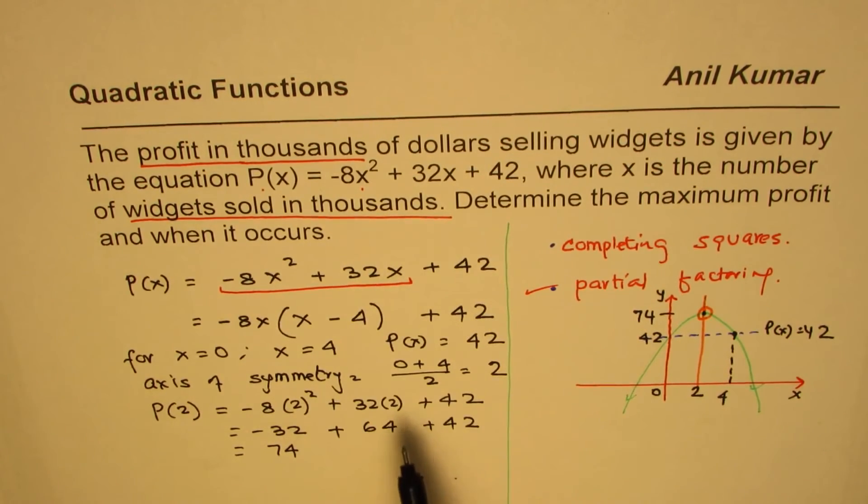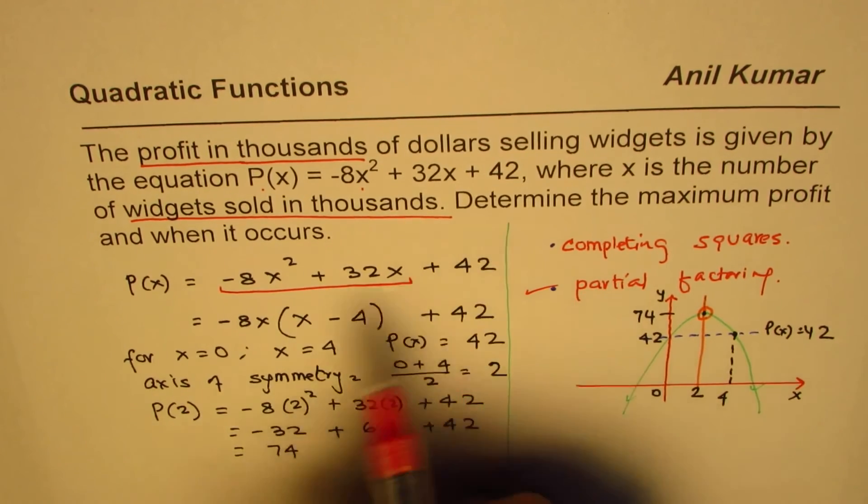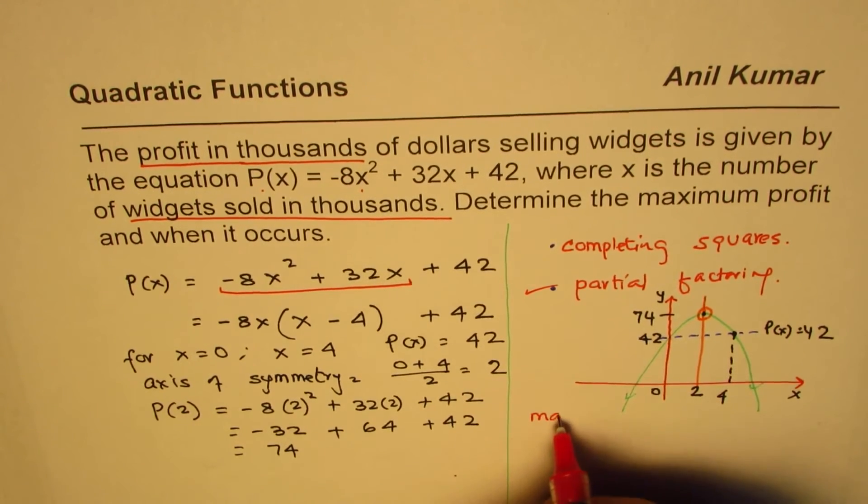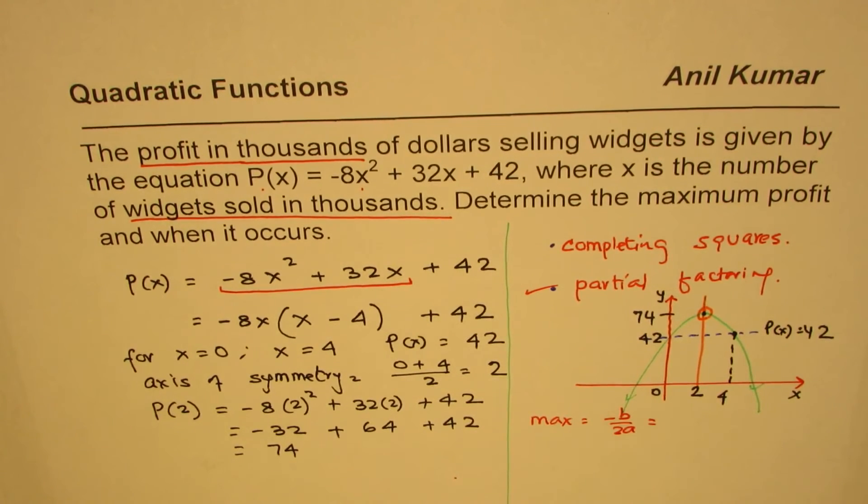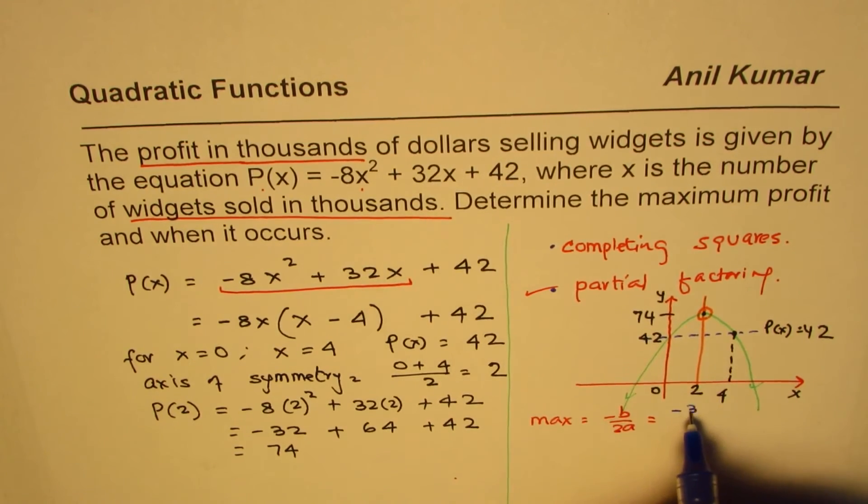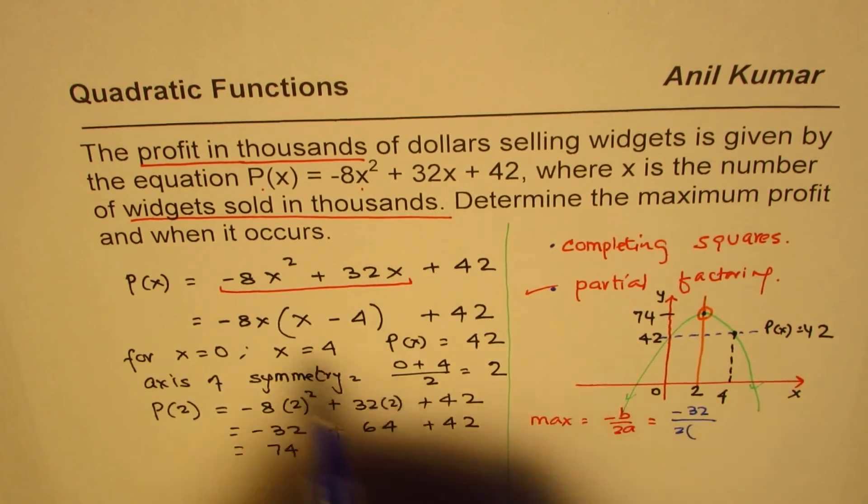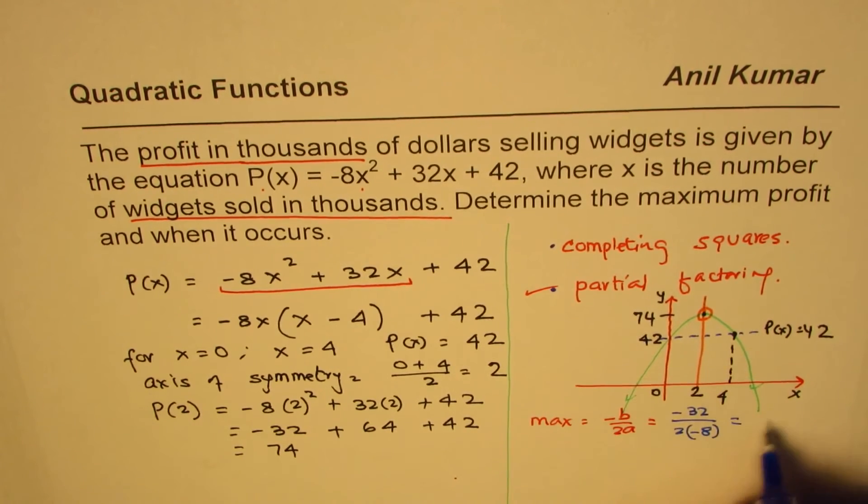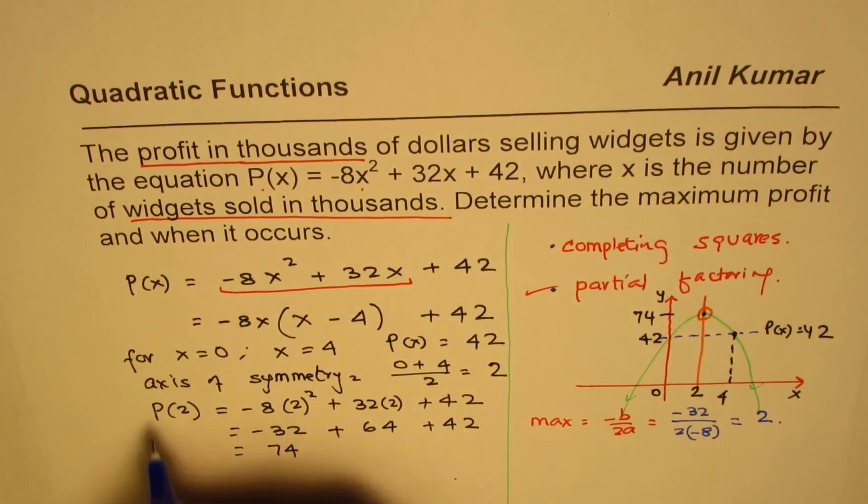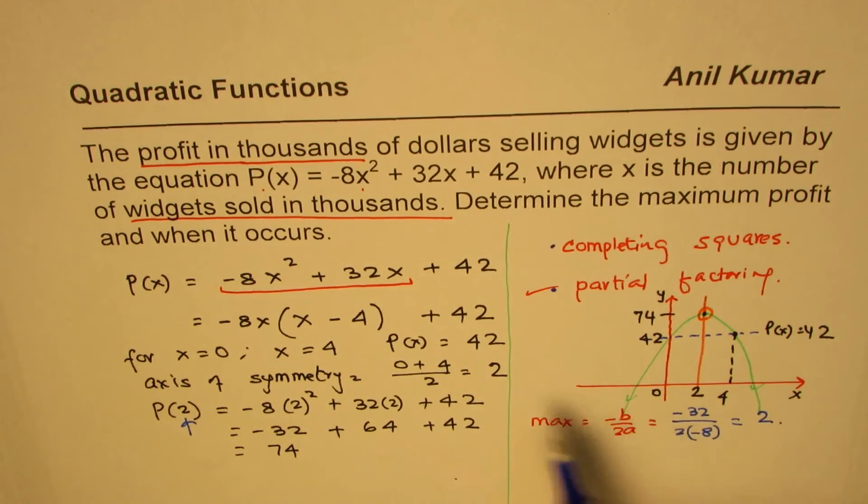Now we need to write down the answer. When you do completing the squares also, minus B by 2A, you could write straight away. So maximum is at minus B by 2A. In this case, minus B is minus 32 divided by 2 times A, which is minus 8. That also gives you 2. So that is a very fast way of doing it. You don't even have to follow these methods. Minus B by 2A gives you the x value where the maximum lies directly for any equation in standard form.